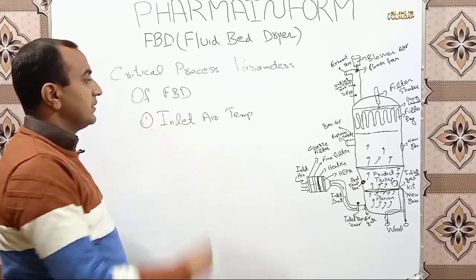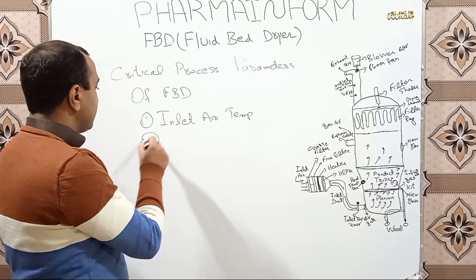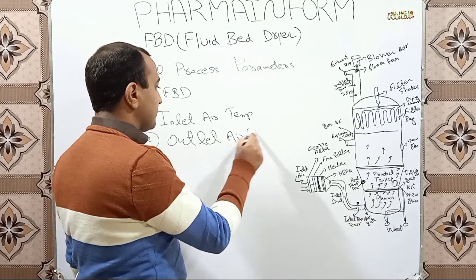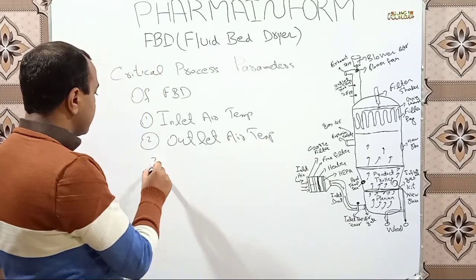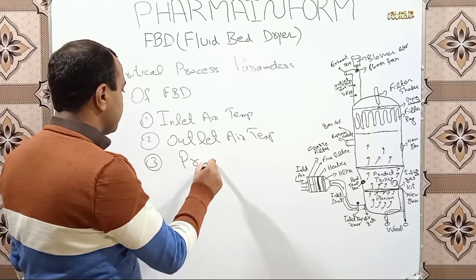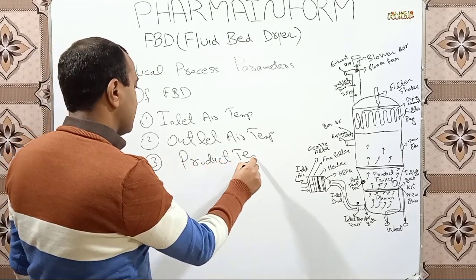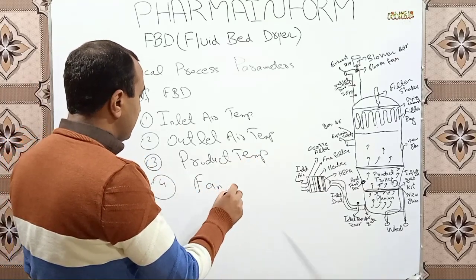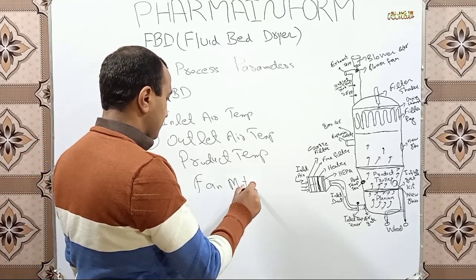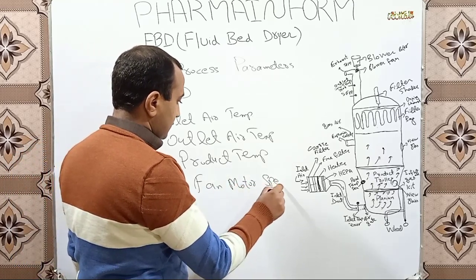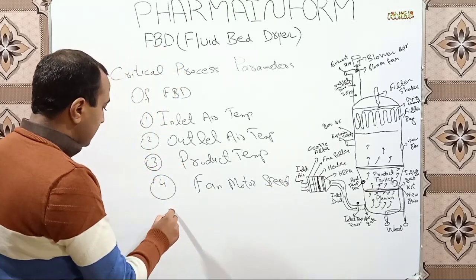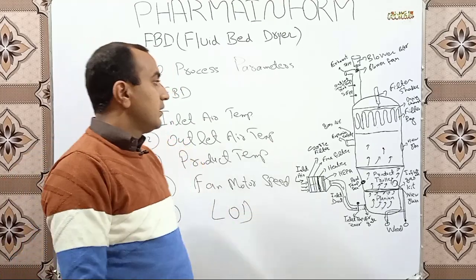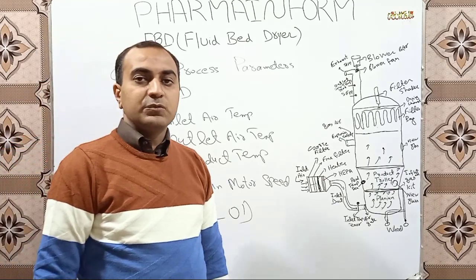The critical process parameters are: first, inlet air temperature; second, outlet air temperature; third, product temperature; fourth, fan motor speed or blower speed; and last, LOD or loss on drying. These are the critical parameters which are observed when we dry our product using FBD.